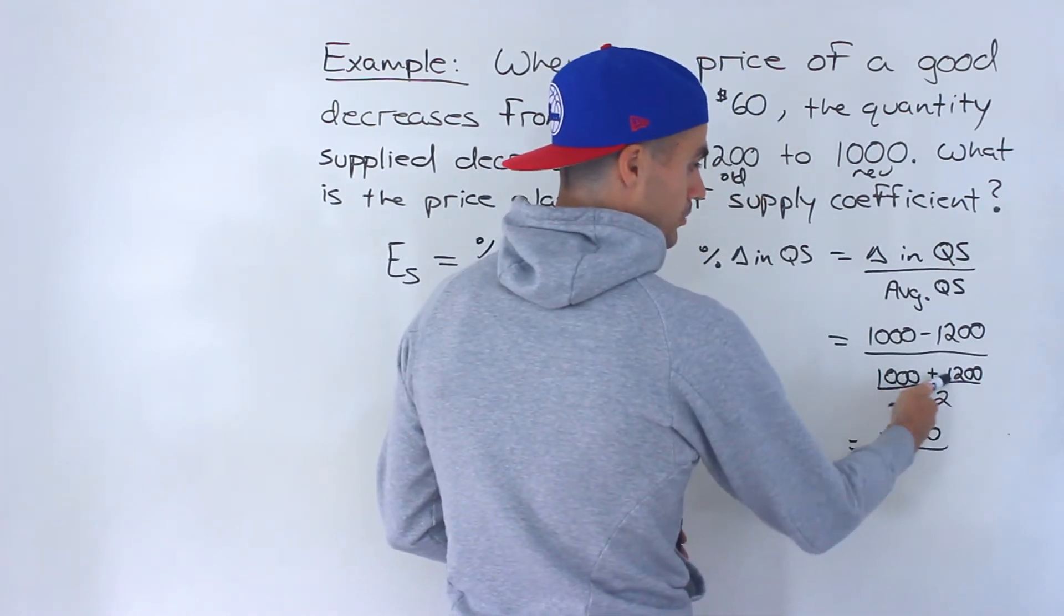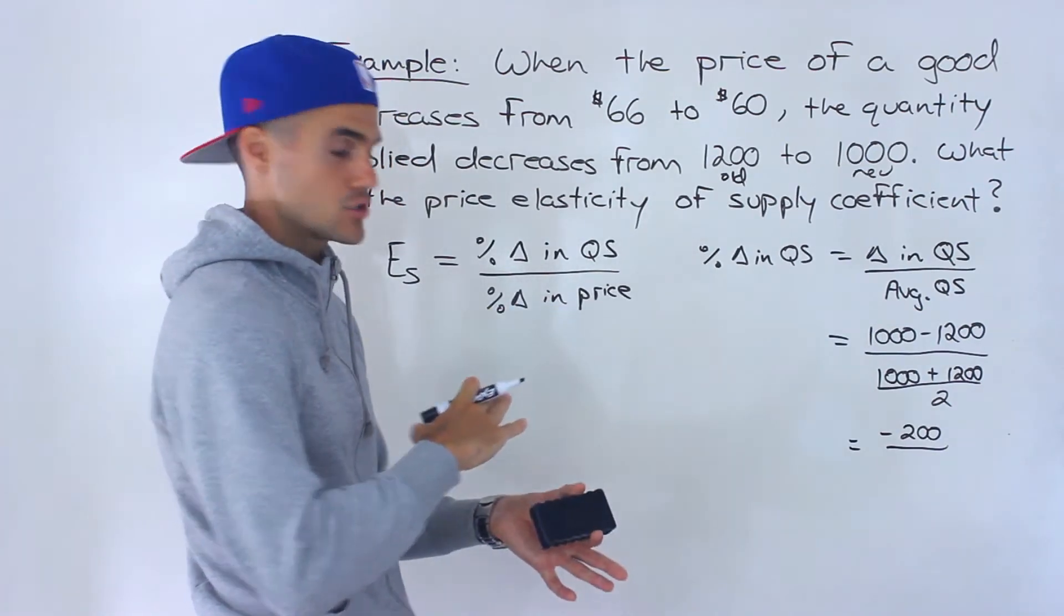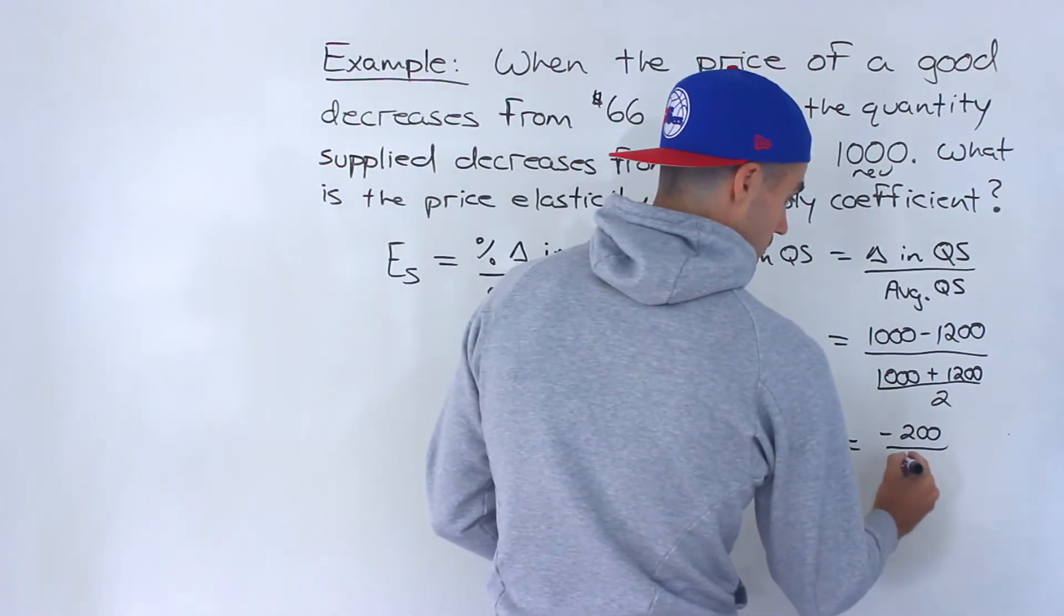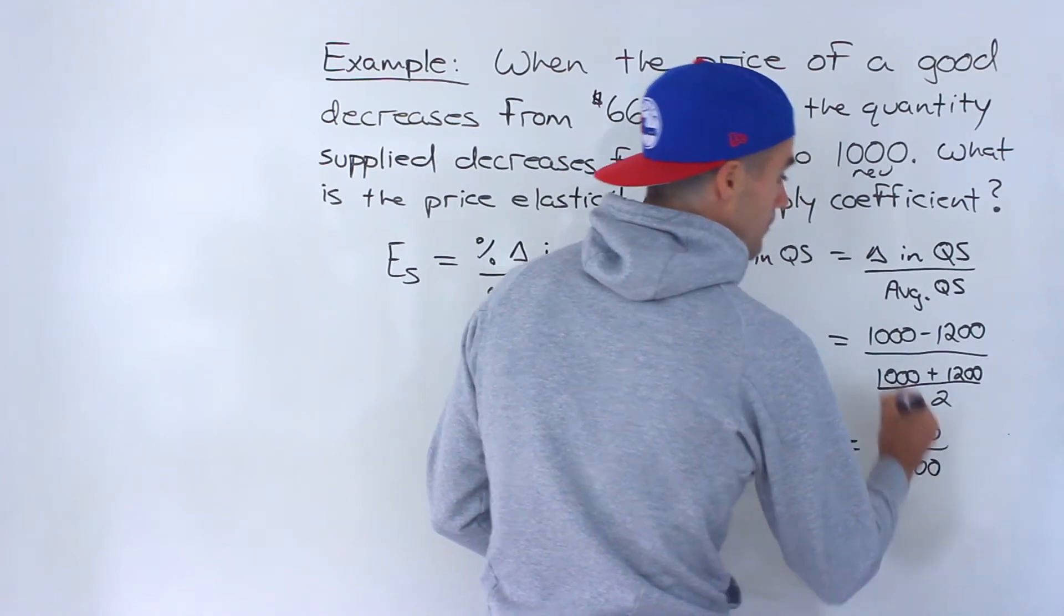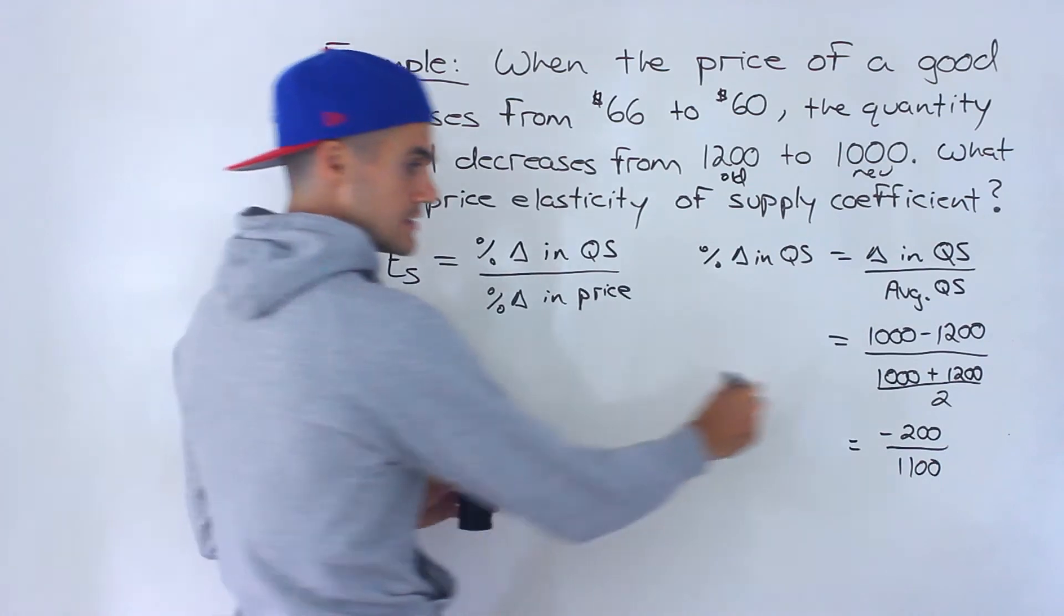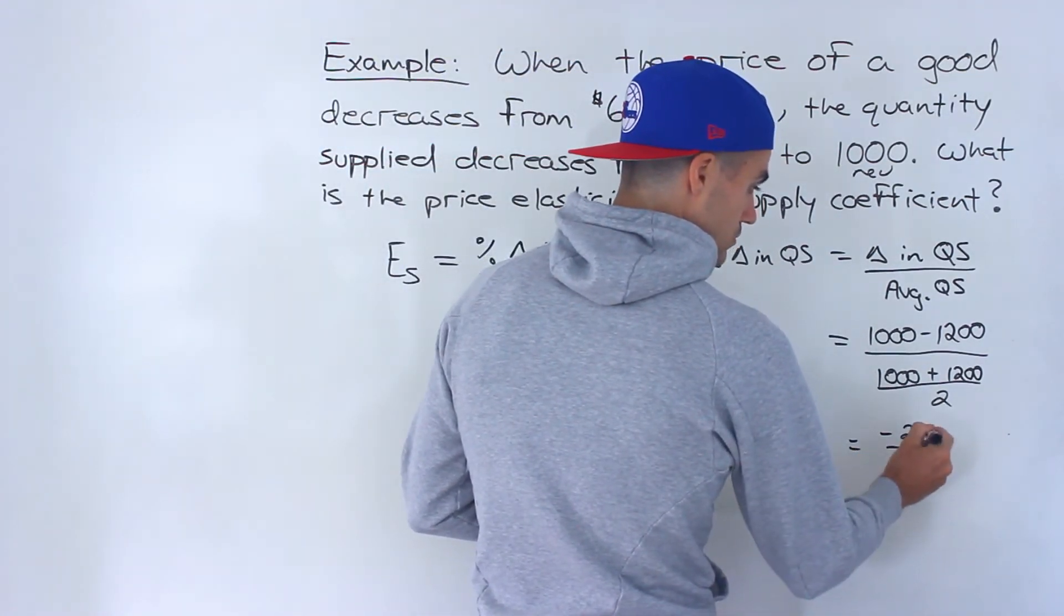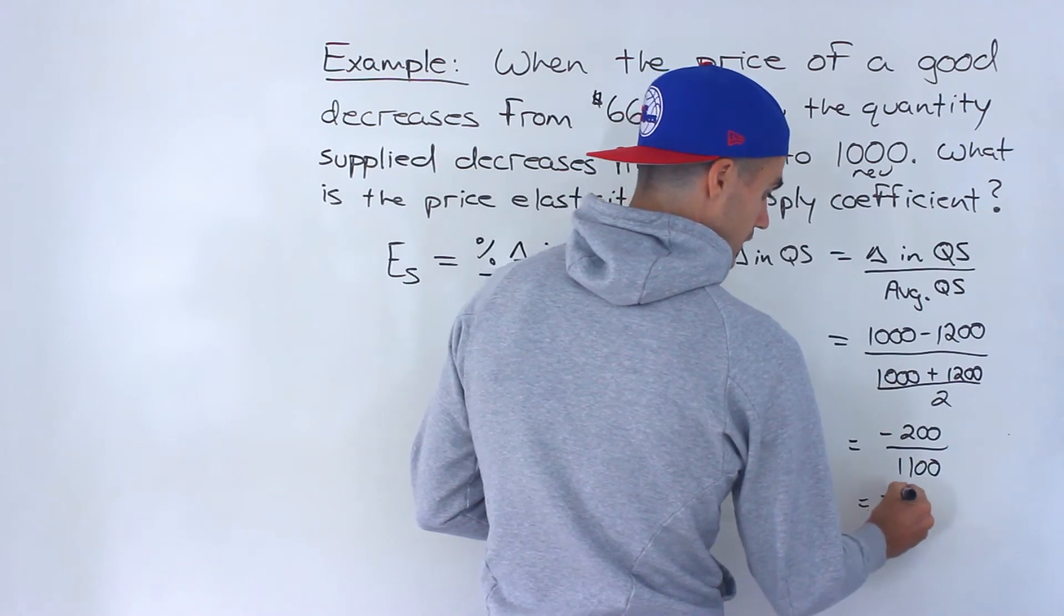And then over here 1000 plus 1200 is 2200 divided by 2 is 1100. It's basically the middle, the average between those two values. And then this here is going to simplify to, notice the zeros will cancel out, negative 2 over 11.